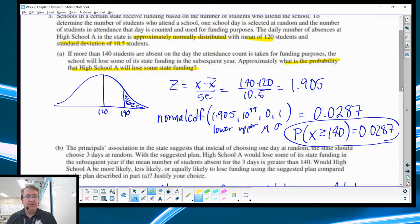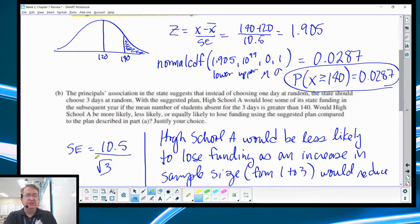So now for question part B down here, the principal's association in the state suggests that instead of choosing just one day, what happens if we choose three days and take an average? So with the suggested plan, high school A would lose some of its state funding in the subsequent year if the mean of a number of high school students for three days is greater than 140. Things you should be thinking about: Normal distribution. What happens with distributions when sample size gets larger? It starts to tighten up, right? Why? Because your standard deviation is getting smaller.